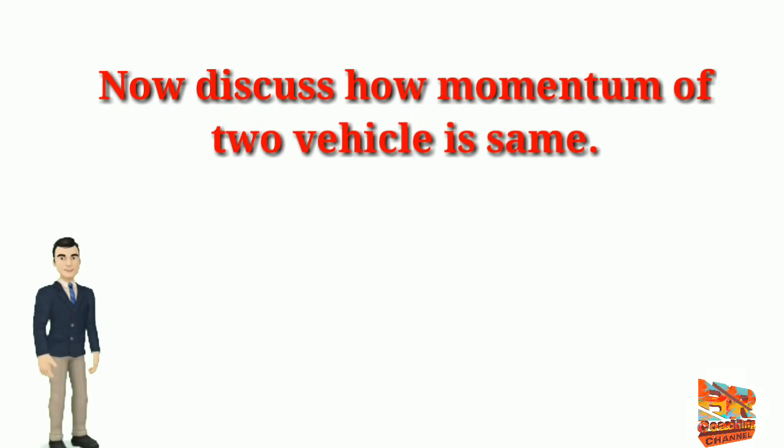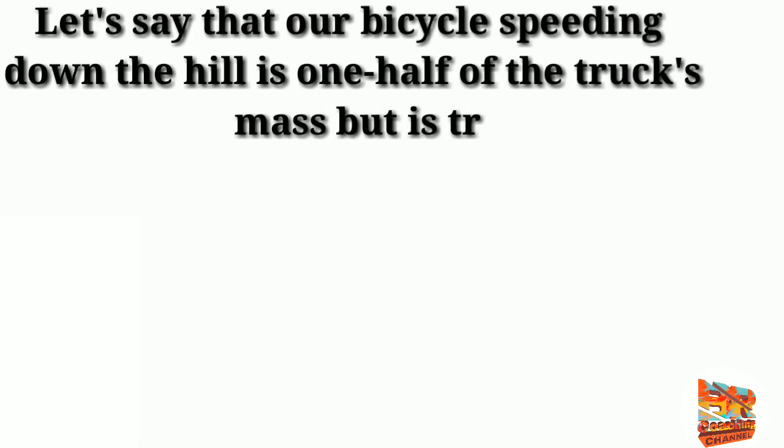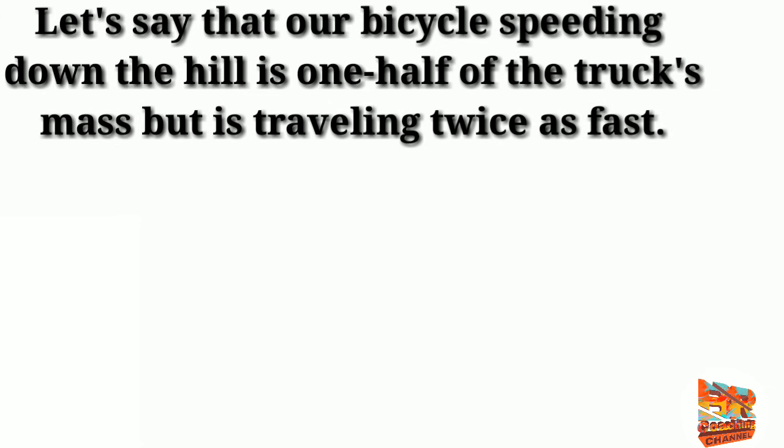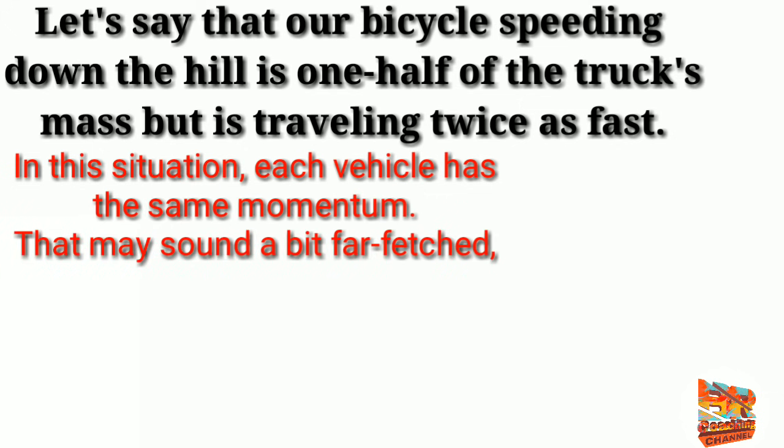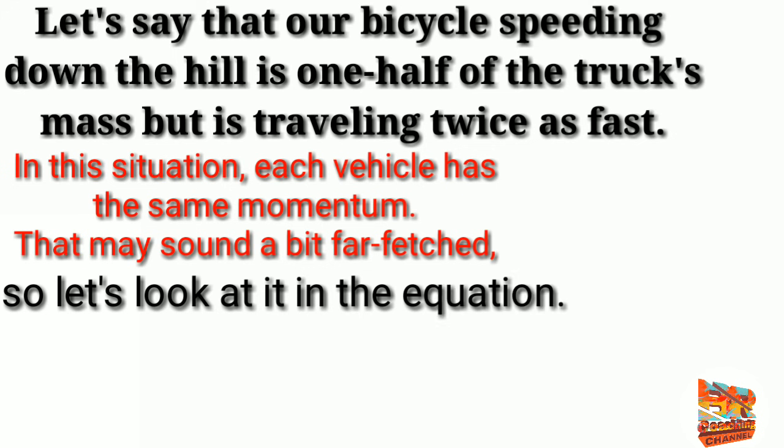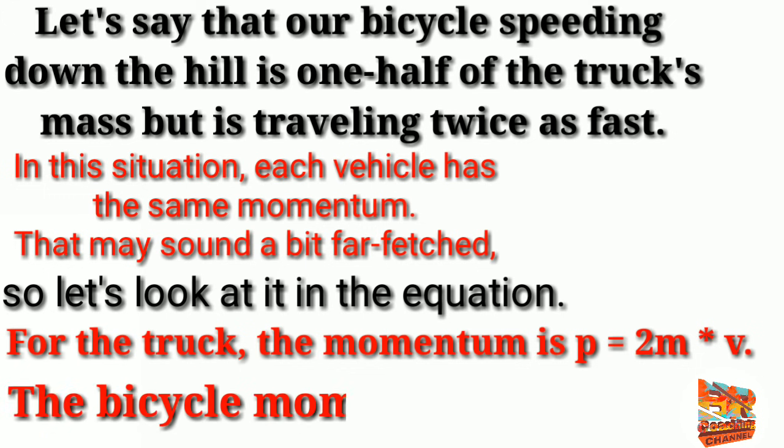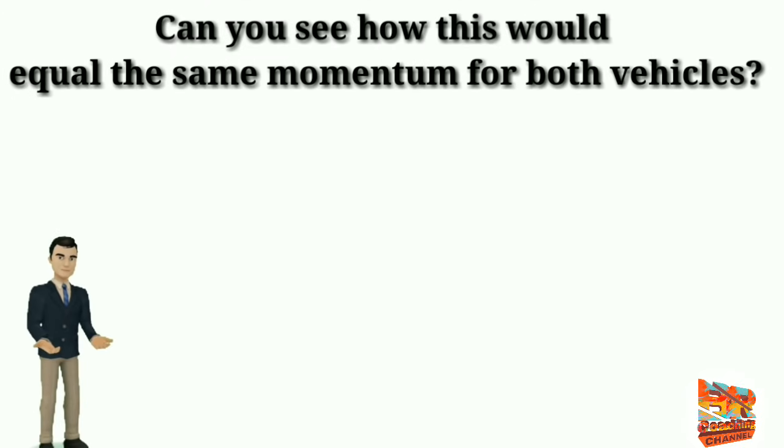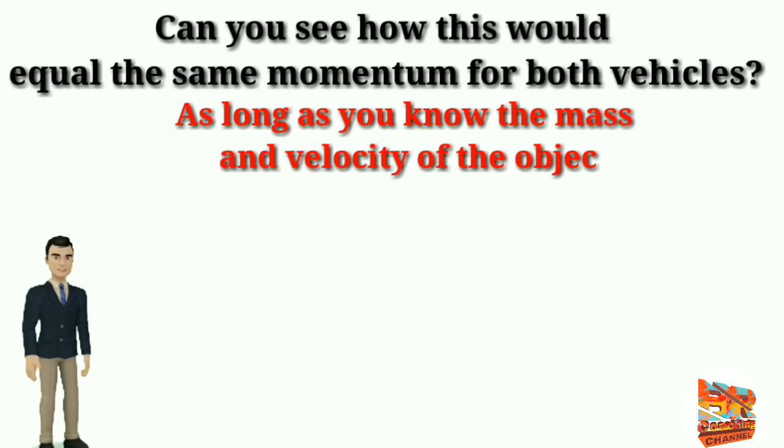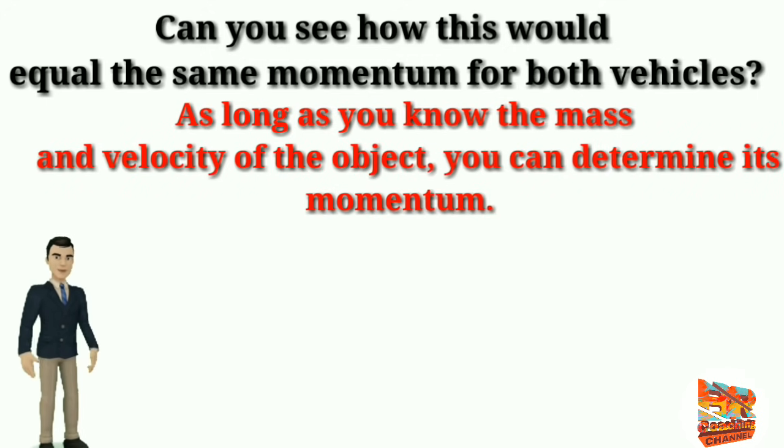Now let's discuss how the momentum of two vehicles can be the same. Let's say that our bicycle speeding down the hill is one-half of the truck mass but is traveling twice as fast. In this situation, each vehicle has the same momentum. That may sound a bit far-fetched, so let's look at it in the equation. For the truck, the momentum is P equals 2mV. The bicycle momentum is P equals m times 2V. Can you see how this would equal the same momentum for both vehicles? As long as you know the mass and velocity of the object, you can determine its momentum.